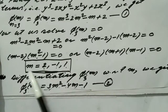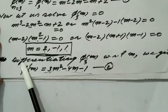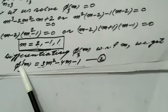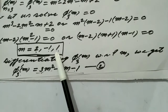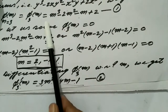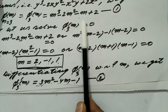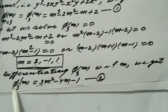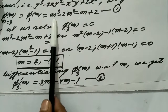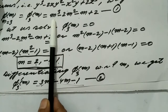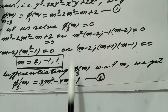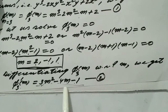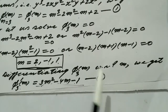Now we differentiate φ₃(m) = m³ − 2m² − m + 2 with respect to m. This gives φ'₃(m) = 3m² − 4m − 1. Call this equation 2.